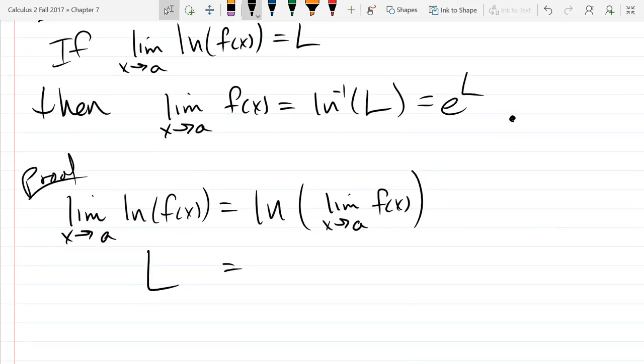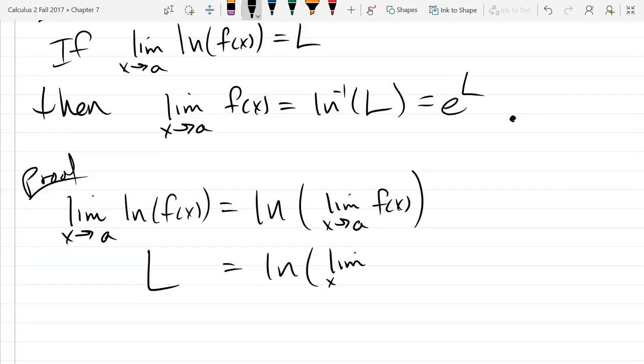So on the right side, I'm just going to copy this down. How do I solve for the limit of F of X, what I put in the box? How do I solve for that? How do I get the ln out of there? Natural log inverse the whole thing. Yep, ln inverse both sides.